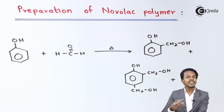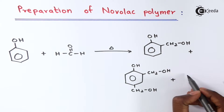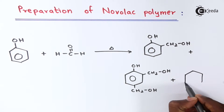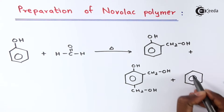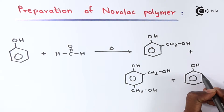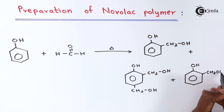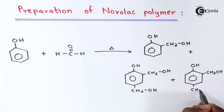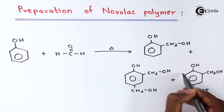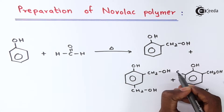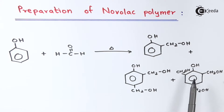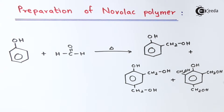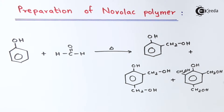We could also get another product where both the ortho hydrogens are substituted by CH2OH groups. Here we have OH, and CH2OH at positions two, four, and six. Therefore, this product is known as 2,4,6-trihydroxymethyl phenol. So this is the mixture of products we get when phenol is reacted with formaldehyde.